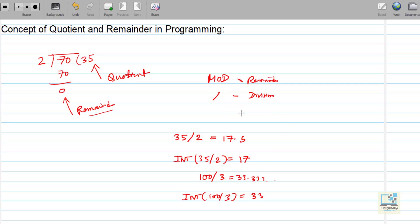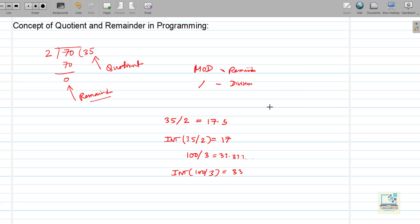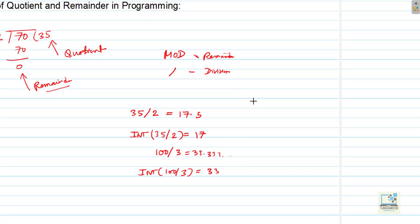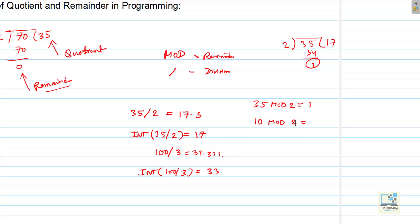We are focusing more on the mod operator in this video because that is where most of the confusion is. We will take examples of positive numbers first. If I take 35 mod 2: two 17s are 34, remainder 1, so that is what we get. Another example: 10 mod 2 — two 5s are 10, no remainder, so 0. Another example: 10 mod 3 — three 3s are 9, 10 minus 9, remainder is 1.